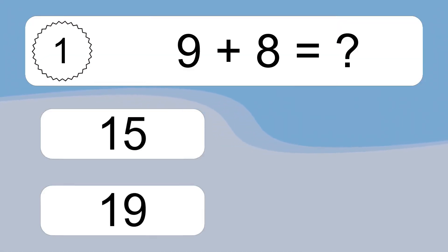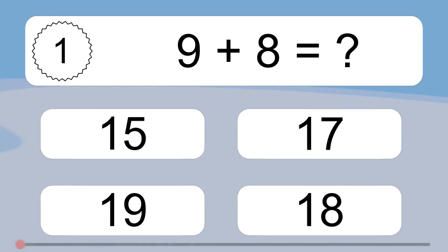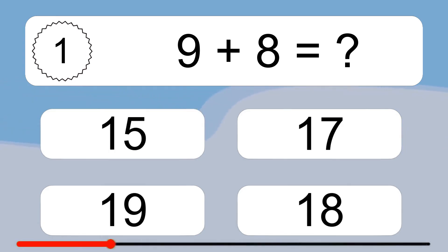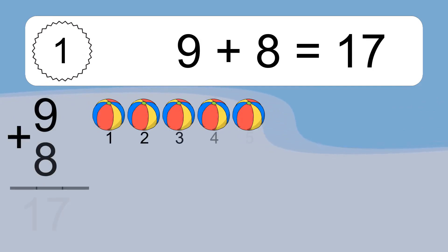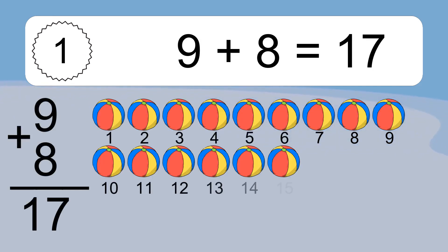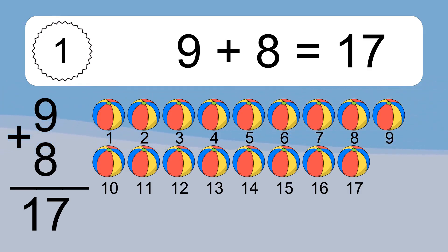9 plus 8 equals what? 9 plus 8 equals 17. Let's count it. 1, 2, 3, 4, 5, 6, 7, 8, 9, 10, 11, 12, 13, 14, 15, 16, 17.